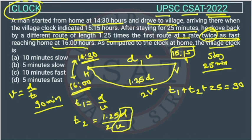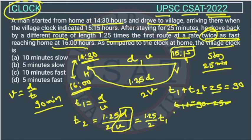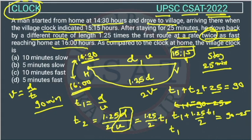Since d/v = t1, we can write t2 = (1.25/2) × t1. Substituting into the equation: t1 + (1.25/2)t1 + 25 = 90. Bringing t1 terms together: (3.25/2)t1 = 90 − 25, which gives (3.25/2)t1 = 65.